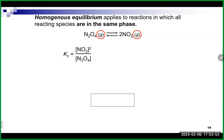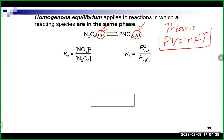Homogeneous equilibrium means everything is in the same phase. For example, if all species are gases, we can write the Kc expression as products over reactants using concentrations — such as [NO₂]² / [N₂O₄]. Because these are gases, we also associate them with pressure. Recall PV = nRT, the ideal gas law. In the ideal gas law, pressure must be in atmospheres, volume in liters, n in moles, T in Kelvin, and R = 0.08206 L·atm/K·mol.